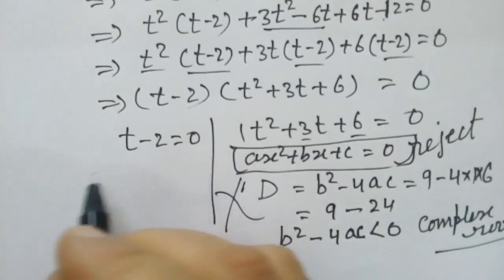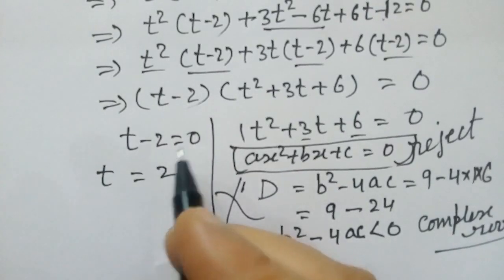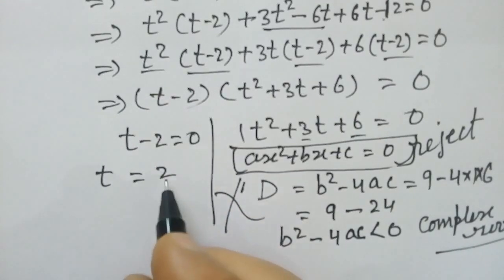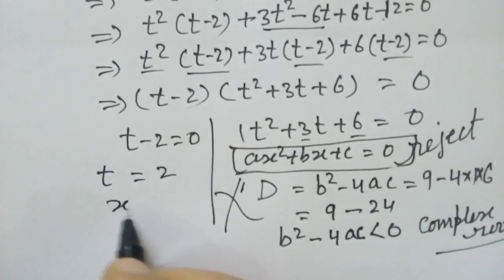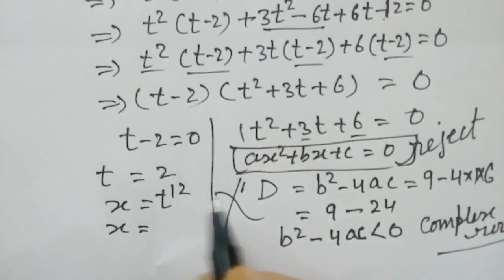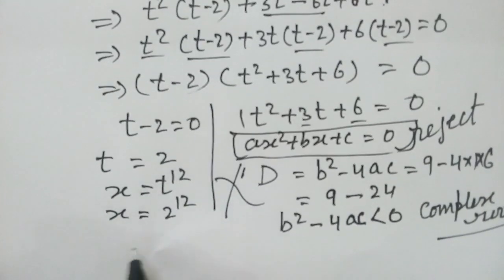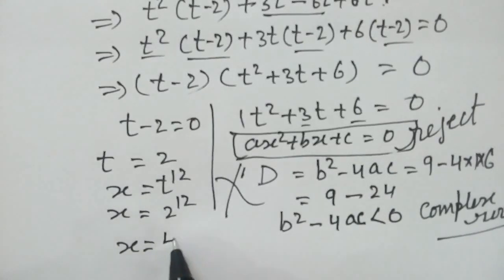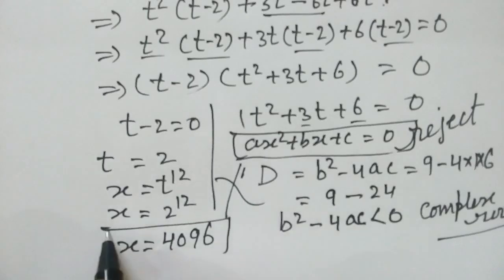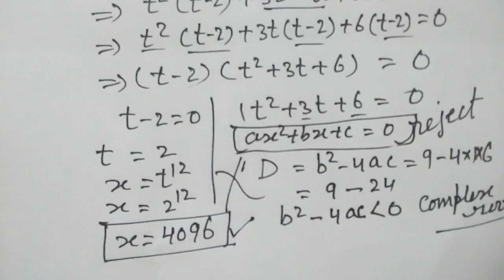So we take t equal to 2. Since x equals t to the power 12, we get x equal to 2 to the power 12, which equals 4096. That is our value of x.